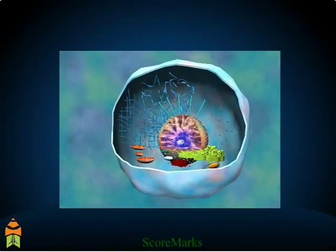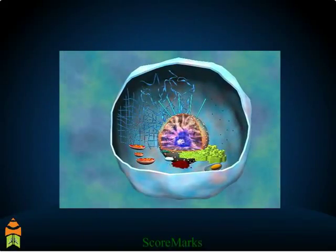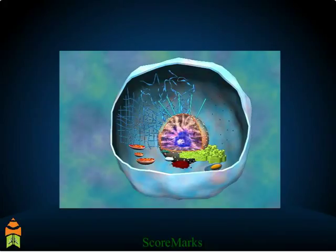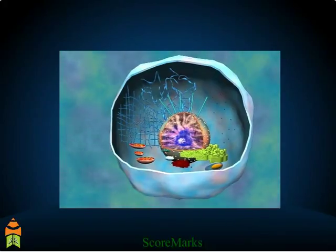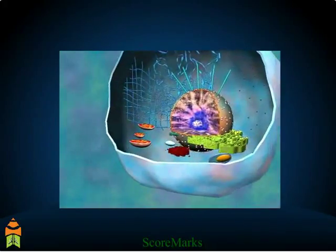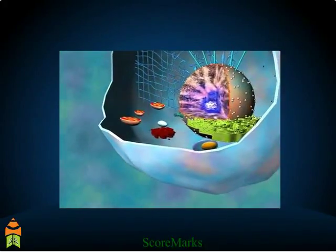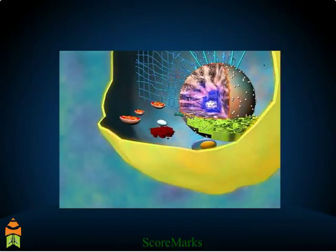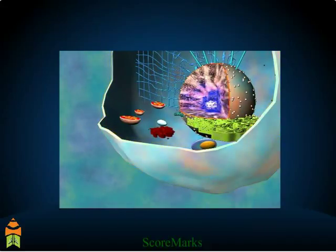Observe the various components of an animal's cell. It has three main parts. The first part is the cell membrane, which forms the outer covering of the cell and is also known as the plasma membrane.